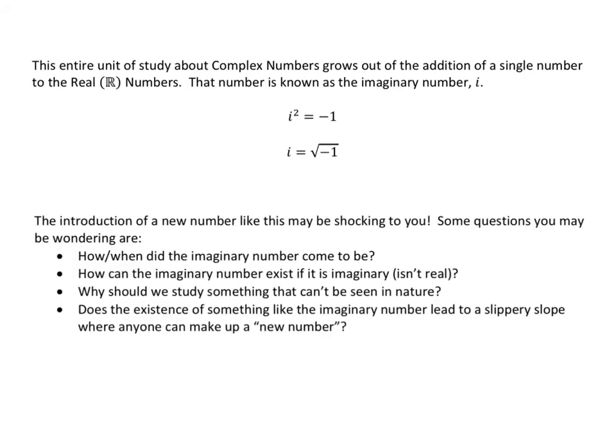This entire unit of study about complex numbers comes out of adding one number to the real number system: the imaginary number, denoted i, which is the square root of negative one. Another way of thinking of it is the number that when multiplied by itself gives us negative one. The introduction of a new number like this might be shocking to some of you.